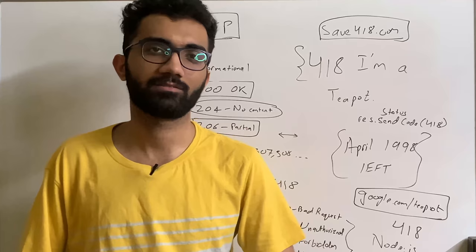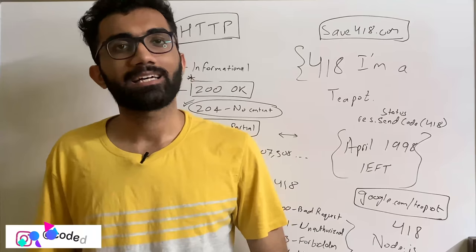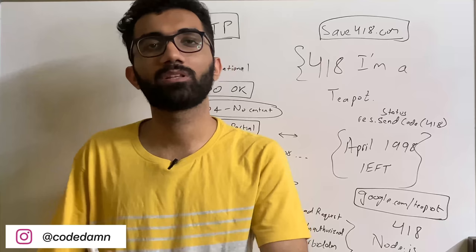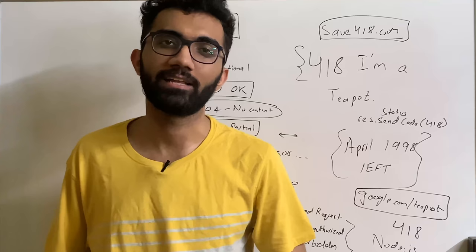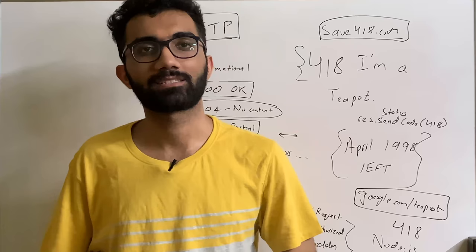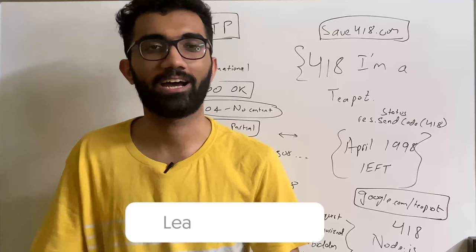On a more serious note, because 418 has been part of the HTTP protocol unofficially, it's possible that a lot of services might break if it's removed from the spec. So it's good for everyone if we just make 418 an official HTTP status code. I'd love to know your opinion — have you ever tried to return a 418? Would you try adding it to one of your REST API endpoints as an Easter egg? Because that is a cool Easter egg.